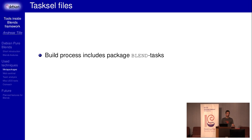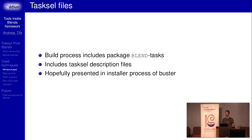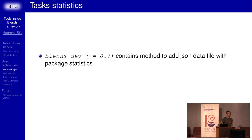The tasksel files are created as well — it includes tasksel description files. And I really hope we get this included into the Buster installer. Moreover, a not-so-important but nice feature in blends-dev 0.7 is that it has some methods to add data files about package statistics. It creates a JSON file containing all previous versions and the packages in depends, recommends, and suggests. So you can create some graphs, which I will show in a moment.